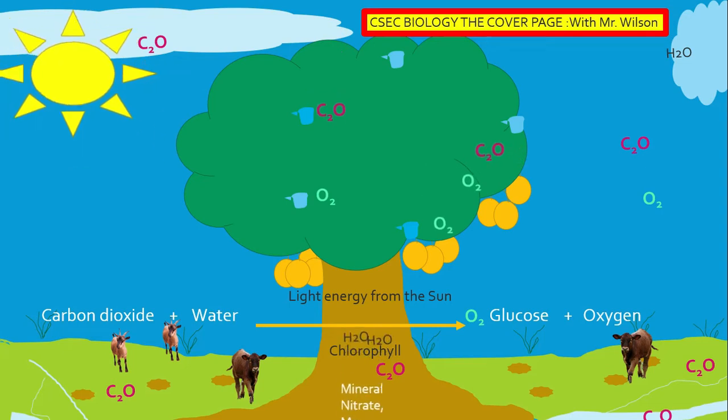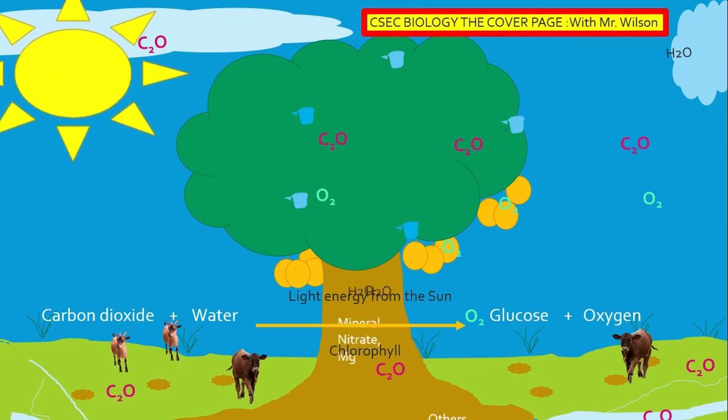So if we look at the equation below, it nicely summarizes the photosynthesis process. Carbon dioxide plus water are the raw material needed for photosynthesis. The condition is light and chlorophyll.